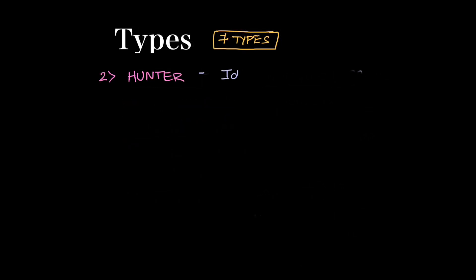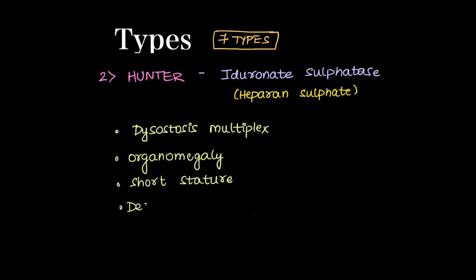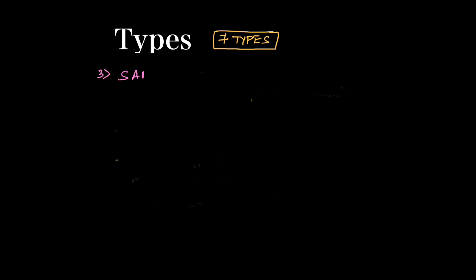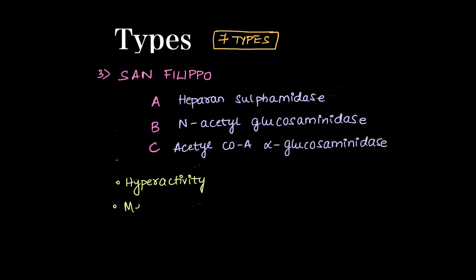The second type is Hunter's disease, in which there is deficiency of iduronate sulfatase, leading to accumulation of heparan sulfate. There is dysostosis multiplex in the skeletal system, organomegaly, short stature, and death within 15 to 20 years. The third type is Sanfilippo's, which has subtypes: subtype A has heparan sulfamidase deficiency, subtype B has N-acetylglucosaminidase deficiency, and subtype C has acetyl-CoA alpha-glucosaminidase deficiency. The child will be hyperactive with mental retardation.